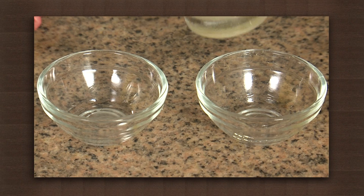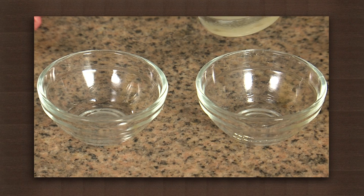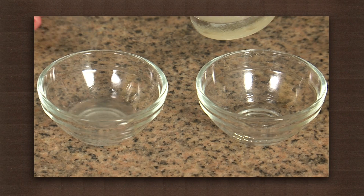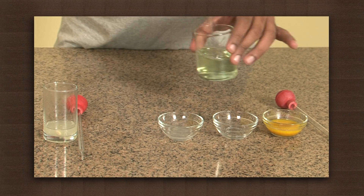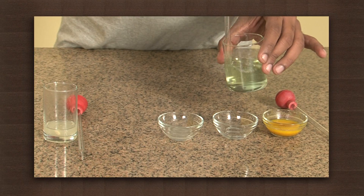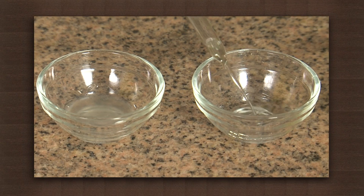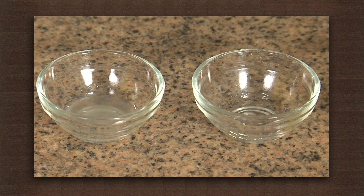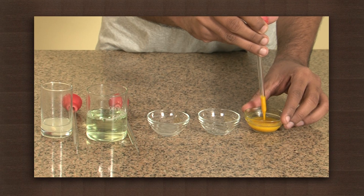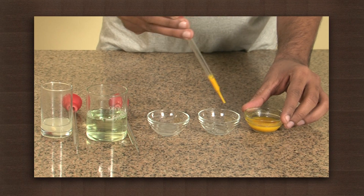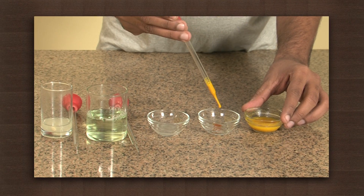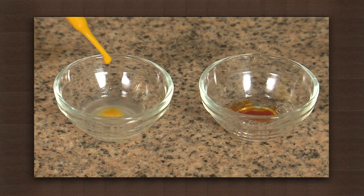Take a little bit of lemon juice in one bowl. In the other bowl, take a little bit of soap water. Add a drop of turmeric solution into each bowl and observe the color of each solution.